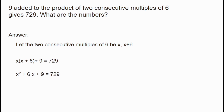We recognize that x squared plus 6x plus 9 is a perfect square. The square root of 9 is 3, so this factors as x plus 3 whole squared. Therefore, x plus 3 squared equals 729.